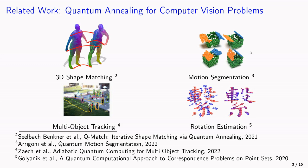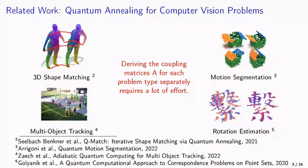Examples for quantum annealing that has been applied to computer vision problems are the following. So we have papers in 3D shape matching, motion segmentation, multi-object tracking, and rotation estimation. This shows that deriving the coupling matrices for quantum annealing is highly non-trivial and requires a lot of effort.